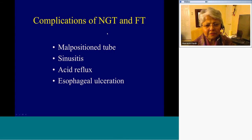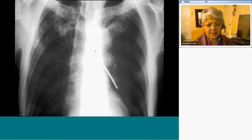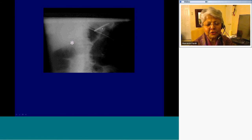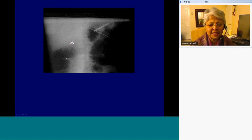Complications of nasogastric and feeding tubes include malpositioned tubes, sinusitis, acid reflux, and esophageal ulceration. This shows a feeding tube extending into the left lower lobe airway. If the tube is in the fundus, it should be past the midline on the side of the patient in the gastric antrum, because that's where you want the feeding to take place — otherwise it will pool in the fundus and cause reflux and related problems.